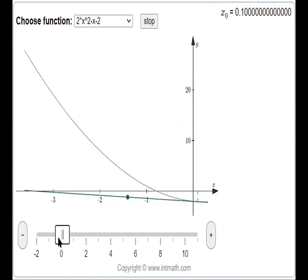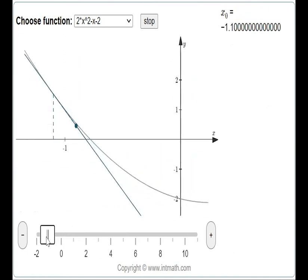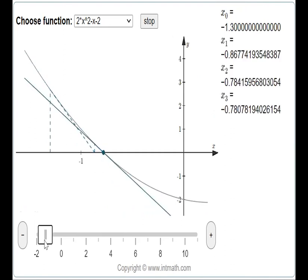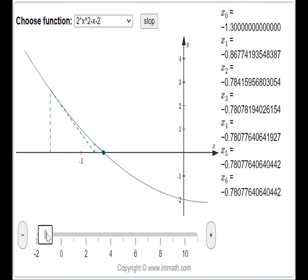For the negative x-intercept, if we choose the initial point as x₀ = -1.3 using Newton's method, we will obtain the closer x-intercept to that number, which is -0.78.